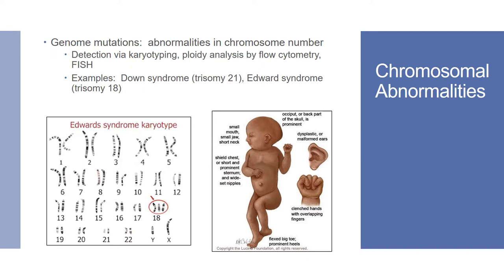We talked about genome mutations in a previous lecture. These mutations result in abnormalities in chromosome number. Detection of genome mutations can be done through karyotyping, ploidy analysis by flow cytometry, or through FISH. An example of a genome mutation is Edwards syndrome, which manifests with a third copy of chromosome 18, also known as trisomy 18. You can see in the image a karyotype that includes that third chromosome 18.